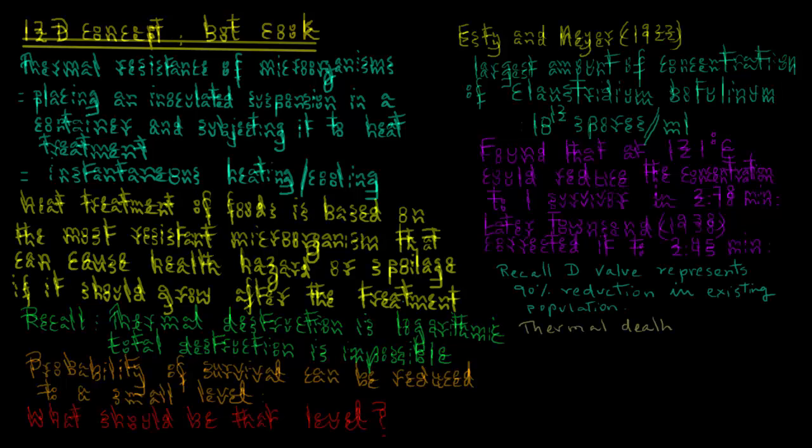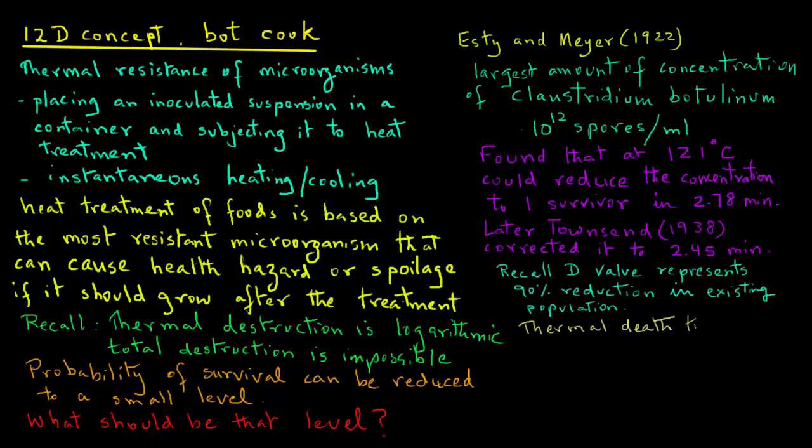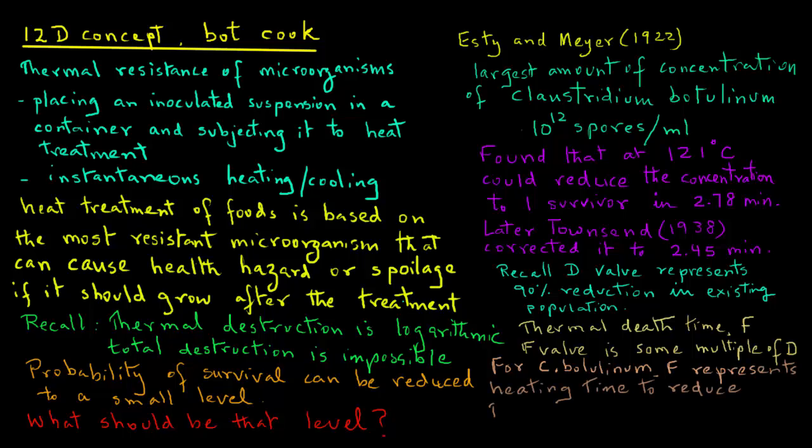Recall that D-value represents 90% reduction in the existing population. And the thermal death time, that is the F-value, is some multiple of the D-value. Note that D-value gives you 90% reduction, but obviously you want more than 90% reduction. So the thermal death time value is a multiple of the D-value. For Clostridium botulinum, then, F represents the heating time to reduce the population by a factor of 10 raised to power 12. As you note in Estee and Meyer's experiments, initial spores from 10 raised to power 12 were reduced to one survivor in their heating treatment.